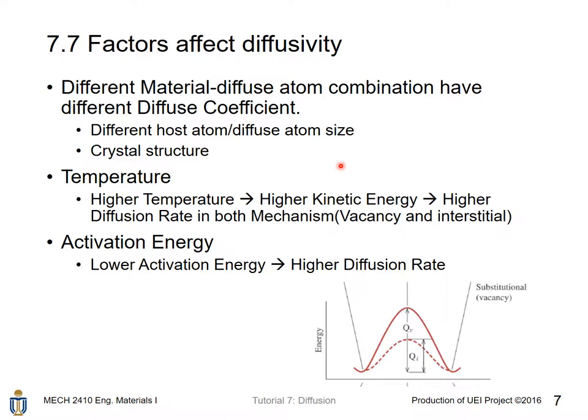There are several factors affecting the diffusivity, D. Different material-atom combinations will have different D-coefficients. This is because for different combinations, there are different host atom and diffusion atom size combinations. Also, crystal structure is different.